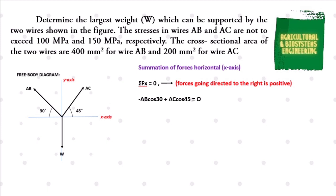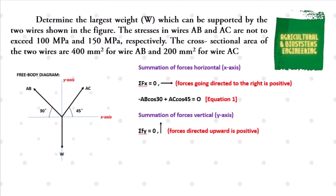Next, we get the summation of forces acting on the y-axis, or forces vertically. We have summation of forces at y-axis is equal to 0. Take note that force directed upward is positive. We now have: AB sine 30 plus AC sine 45 minus W is equal to 0. This will be our equation 2.